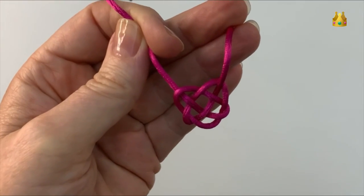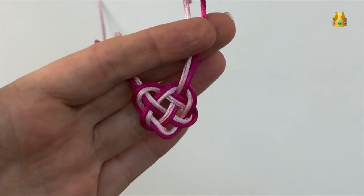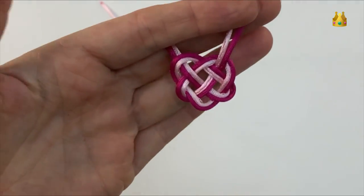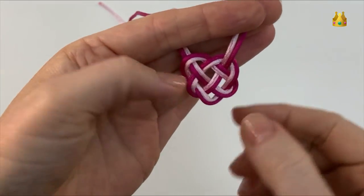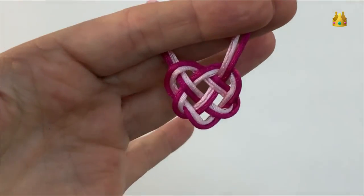In this video we're making a Celtic heart knot. You can also make this same design with two different coloured cords. It's the exact same method but I think it's slightly easier to do it with just one so that's how I'm going to show you today.